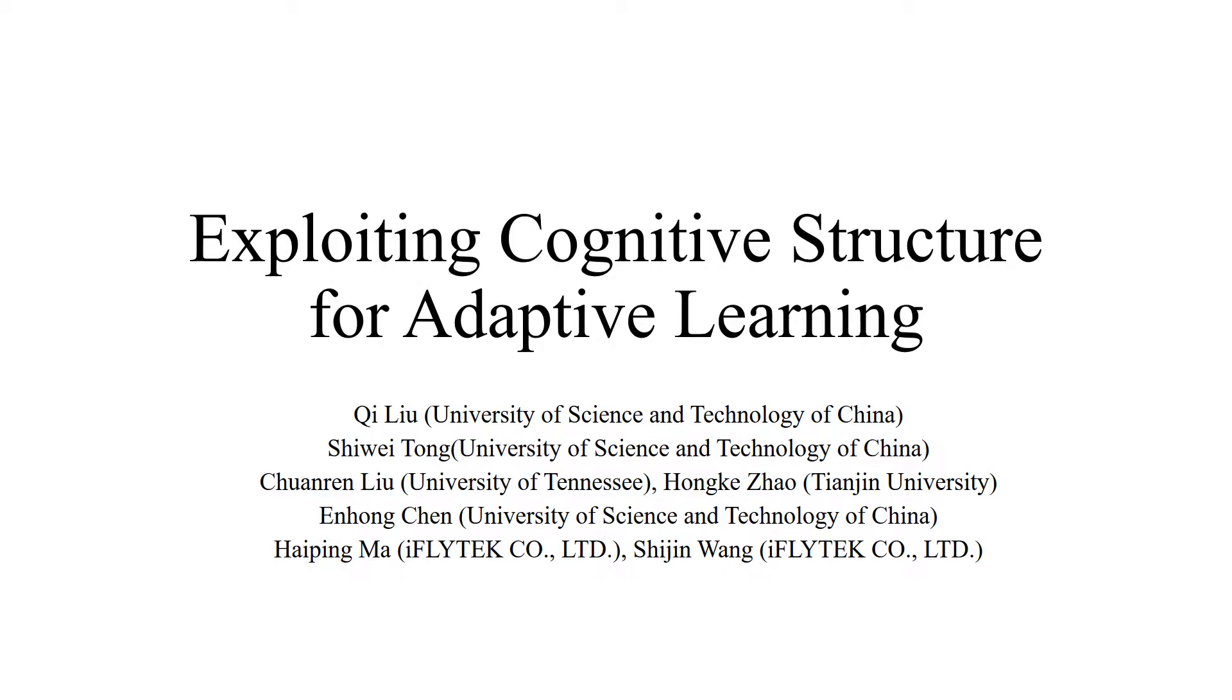Learning is the ladder of the progress of mankind and adaptive learning aims at making learners be their own learning tempo. We manage to exploit cognitive structure for adaptive learning.